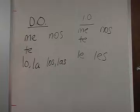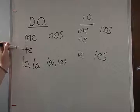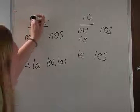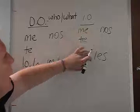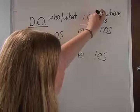Today we're going to talk about direct and indirect object pronouns. Your direct object pronouns, which I'm going to abbreviate as DO, are: me, te, lo, la, nos, los, and las. Remember your direct object pronouns ask who or what after the verb. Your indirect object pronouns, abbreviated IO, are: me, te, le, nos, and les. Remember that asks to whom or for whom after the verb.